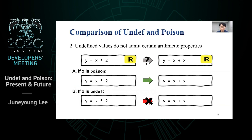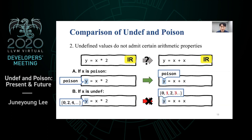The second difference: unlike poison, undefined values do not admit a few arithmetic properties. Consider the transformation converting x times 2 into x plus x. If x is well-defined this is trivially sound, and if x is poison, y is poison in both source and target. However, if x is undef, the multiplication in source is done pairwise causing y to be a set of even numbers, but after optimization the addition between two full-set integers makes y a full set of numbers again. Therefore, this optimization is incorrect when x is undef.